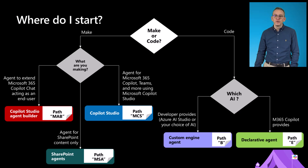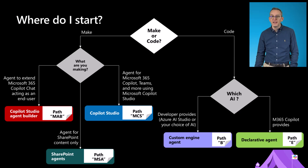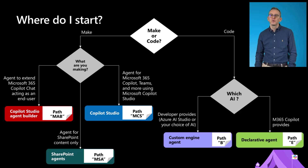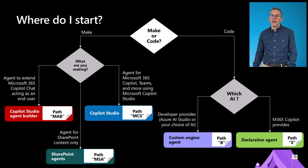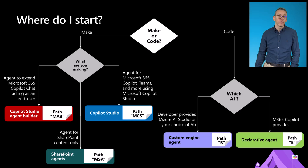If you are going to extend Microsoft 365 Copilot as an end user using the UI of Microsoft 365 Copilot itself, you will most likely go for the Copilot Studio Agent Builder path which is called MAB, which stands for 'make with agent builder'. If you want to create agents targeting Microsoft 365 Copilot but also Microsoft Teams and many more channels using Microsoft Copilot Studio, you will go for the training path called MCS, Microsoft Copilot Studio.